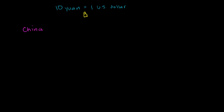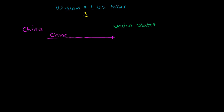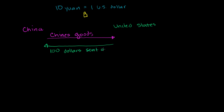So this is China right here, and then you have the United States right over here. At this exchange rate, you have goods coming from China to the US — these are Chinese goods. And then we are paying for those Chinese goods in dollars, and those dollars are being sent to China. Let's say in this time period — let's say it's a year — $100 is sent to China for the goods. This is really just a summary of what we saw in the last few videos.